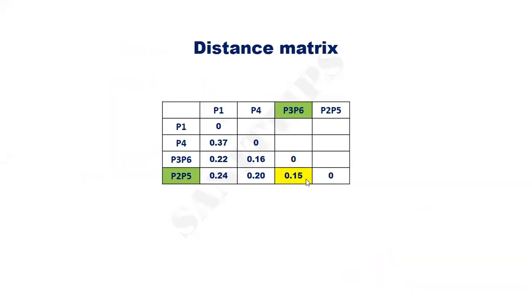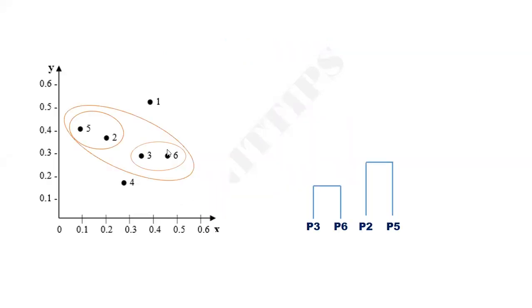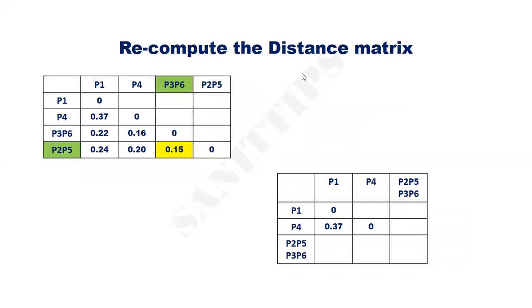Again, identify the smallest distance. It is 0.15, which is the distance between {P3, P6} and {P2, P5}. Hence, we can club these two clusters together. So now P2, P5, P3, and P6 all form one cluster. This is the corresponding dendrogram.